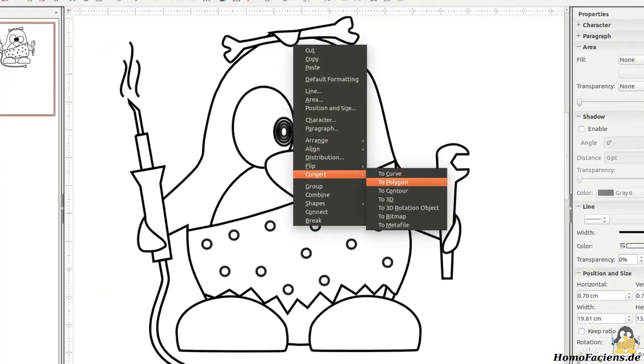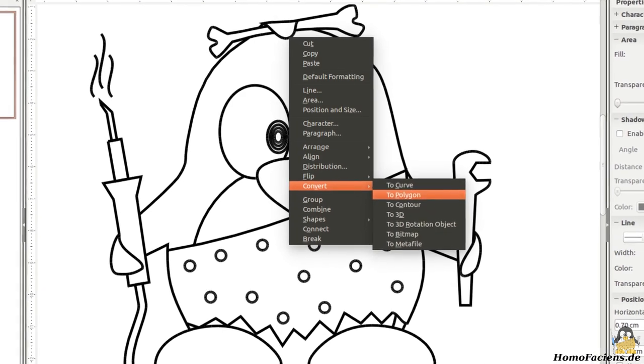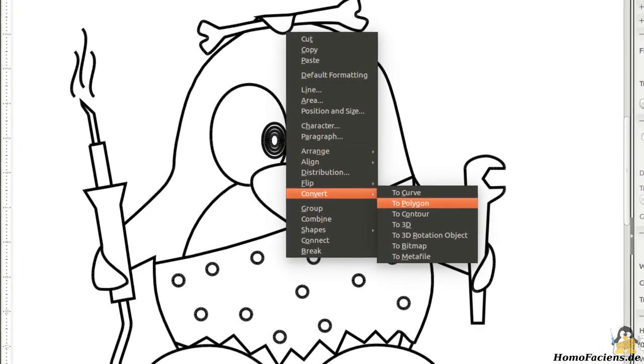Before exporting, you must convert all paths into polygons. Details about using my script are available on my pages.